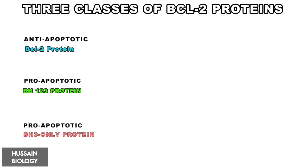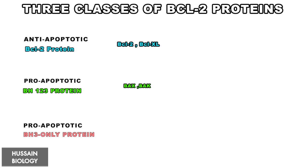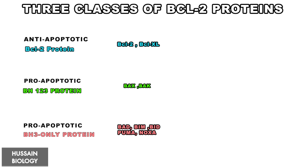Now let's see some examples in each class. The anti-apoptotic proteins include BCL-2 and BCL-XL. The pro-apoptotic proteins with BH1-2-3 domains include BAX and BAK. Finally, the pro-apoptotic proteins having only the BH3 domain include BAD, BIM, BID, PUMA, and NOXA.